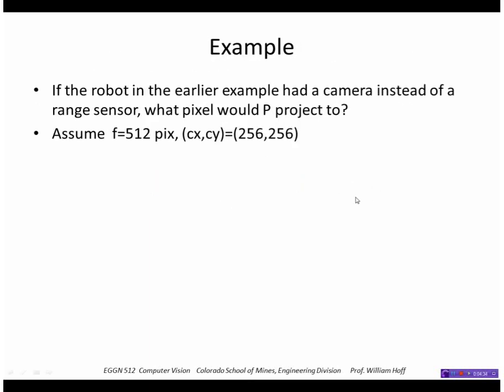Let's do an example. I had that problem earlier where we had a robot vehicle and a sensor on it and we were looking at a world point. So let's think of that situation except instead of a range sensor we're going to use a camera there.